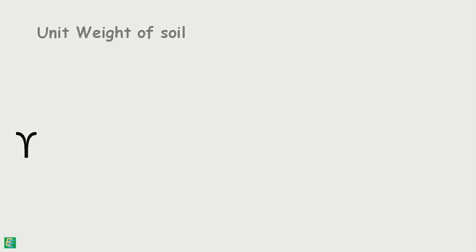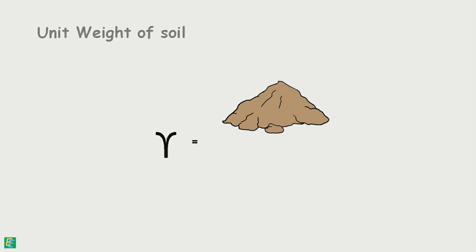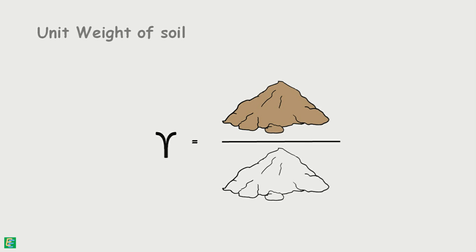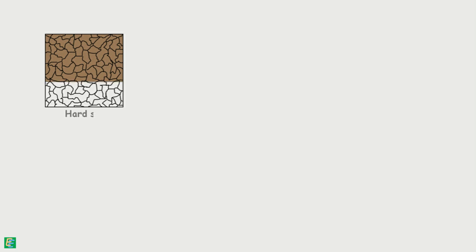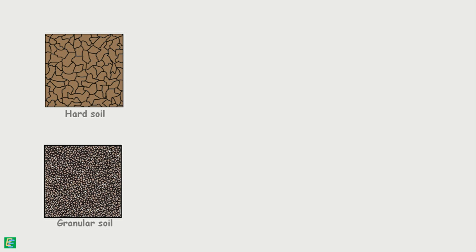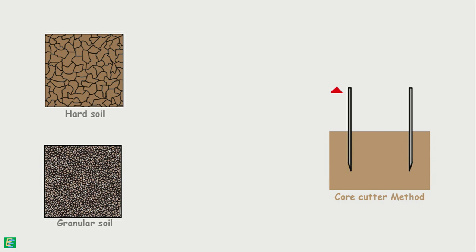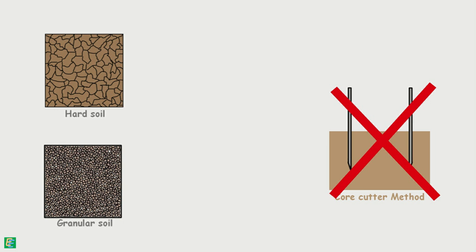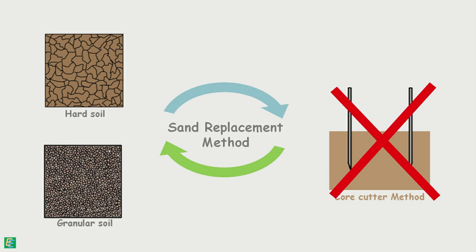Unit weight of soil is the weight of a soil sample divided by its volume. For soils such as hard soil or granular soil where the core cutter method cannot be applied, the sand replacement method is used for the determination of unit weight of soil in its natural state.